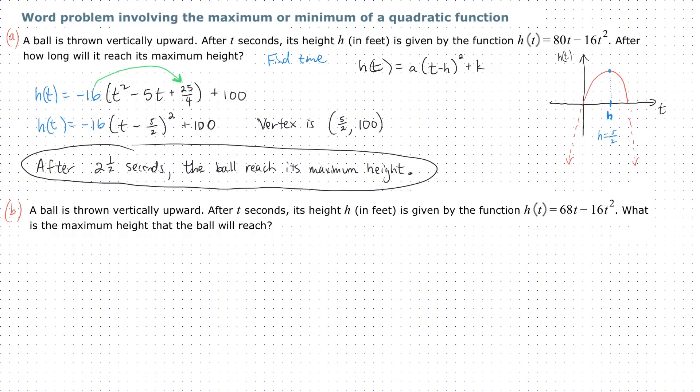We want to attempt part B in a very similar fashion. This is a different ball. In part B, a ball is thrown vertically upward. After t seconds, its height h in feet is given by this function. What is the maximum height that the ball will reach?